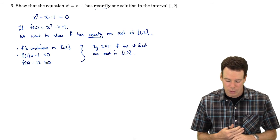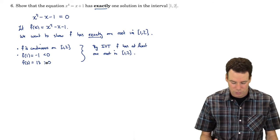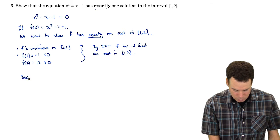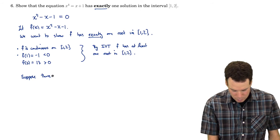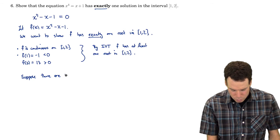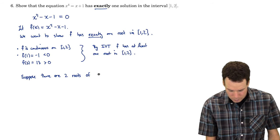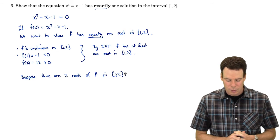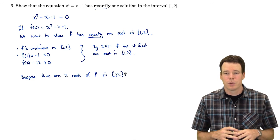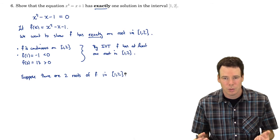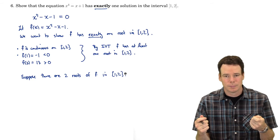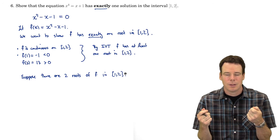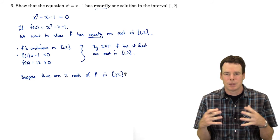We need to show that there's exactly one root. The Intermediate Value Theorem just allowed us to conclude there's at least one root. This is where the Mean Value Theorem comes in. What we're going to do is suppose there are two roots of f in the interval 1 to 2, and then conclude that that's impossible by arriving at an absurd result. If we've got more than two, just pick two of them.